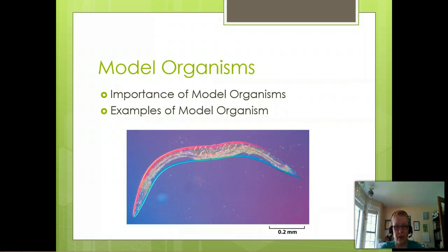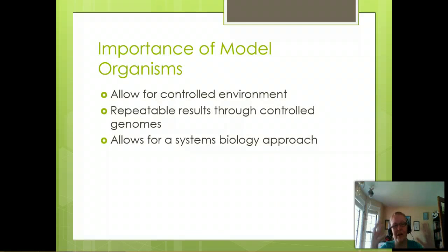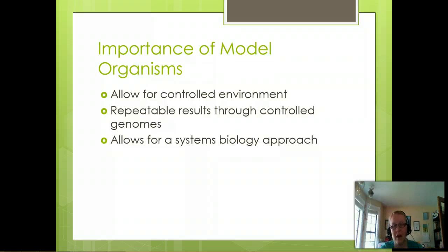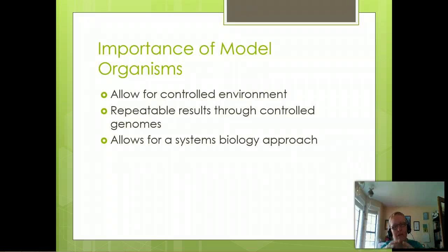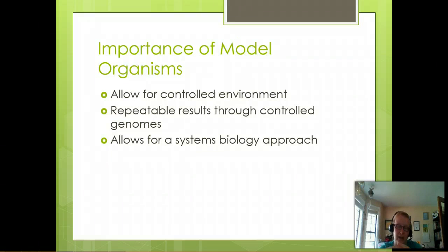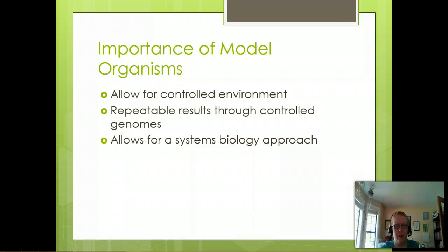Let's talk about model organisms — another workhorse besides our microscopes that we use in cell biology. A model organism is needed because cells don't always provide everything we need to know. For instance, if I grew up skin cells, I could do many experiments but wouldn't be able to know how they work in concert with the circulatory system. Model organisms also allow for a controlled environment — if I'm always using the same organisms, I can ensure my experiments are repeatable. Generally, model organisms are not the first place we go because they're very expensive and require a lot of time and effort.